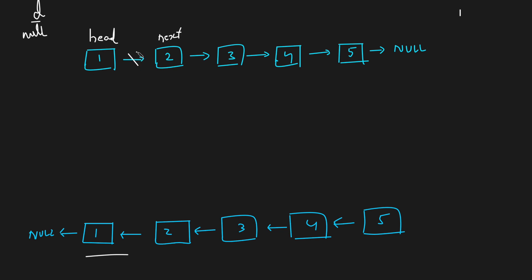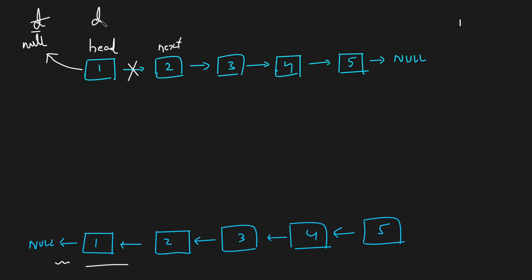After this, we break head's next pointer and point it to the dummy node, which is null. This achieves our first objective: the head node now points to null. Then we take the dummy node and point it to the head, and we take the head and point it to next, which is 2. With this, the first iteration is complete.